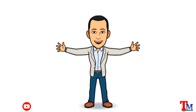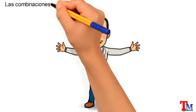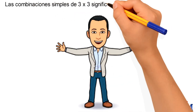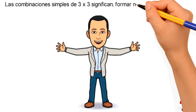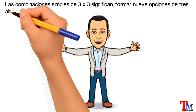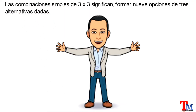Y para ello, comenzaremos introduciendo su concepto, que se definen como: las combinaciones simples de 3x3 significan formar 9 opciones de 3 alternativas dadas.